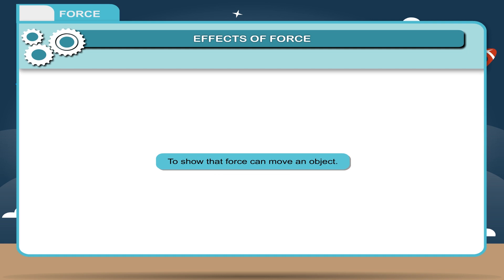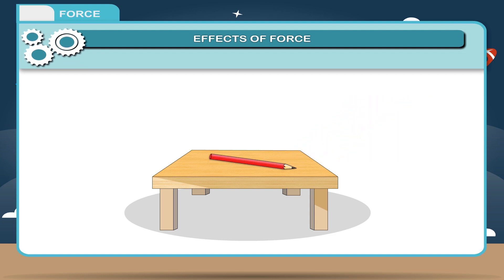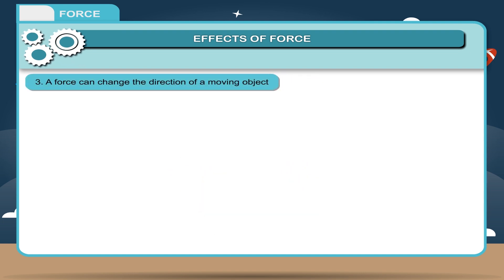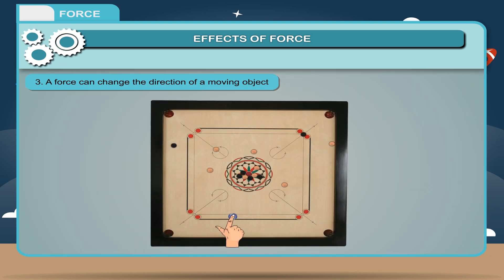Activity: To show that force can move an object, place a pencil on the tabletop and strike it with your fingers. You will see that the pencil moves ahead. This shows that the force applied can displace an object. A force can also change the direction of a moving object — a batsman changes the direction of a moving ball by tilting the cricket bat, and you can change the direction of a carom coin by hitting it at an angle with a striker.